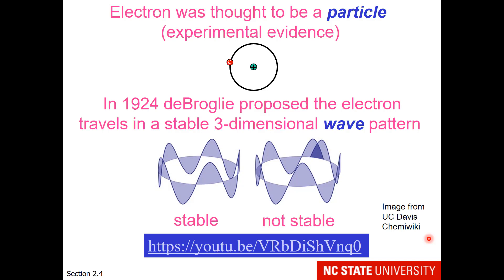Here's the general theory behind the Schrödinger model. The electron was thought to be a particle, and we have experimental evidence that when electrons impact something, they have a mass-like effect and changes occur. But the electron is also an extremely small particle. So in 1924, de Broglie proposed that the electron travels in a stable, three-dimensional wave pattern. If the mountains and valleys line up as the electron moves around a particular orbital, this is considered a stable pattern. However, if the pattern results in different locations for the valleys and mountains each time, this is a not-stable wave pattern.